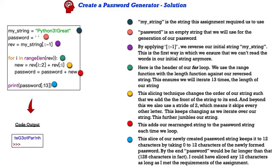This further jumbles our string. With the red dot, we add our rearranged string to the password string each time we loop. And that's going to get very long. In fact, it'll be 128 characters long by the time we're done. So here, in this final lighter blue dot, I take a slice of the newly created password to make sure that I take in only 12 characters. I could have used any 12-character slice as long as it met our requirement of the assignment.